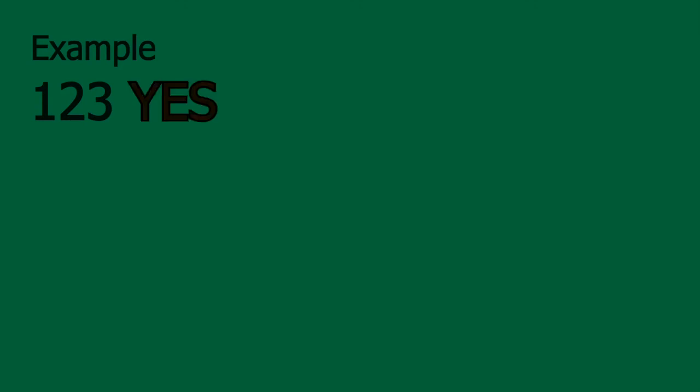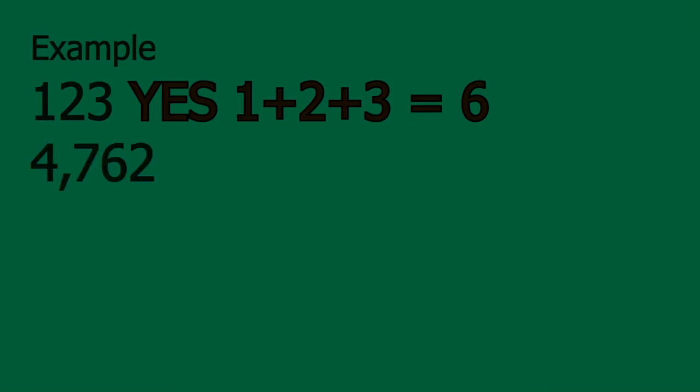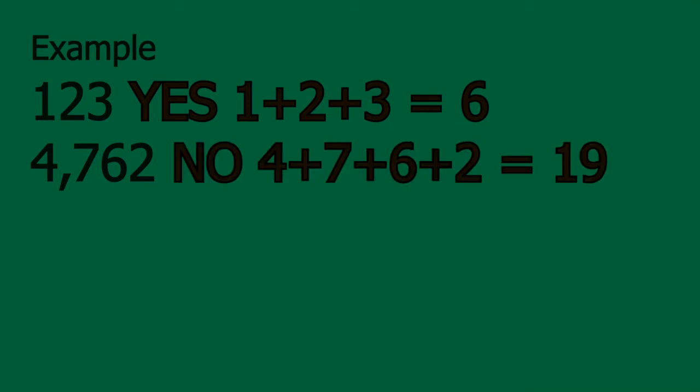For example, let's look at 123. We know 123 can be divided by 3 because 1 plus 2 plus 3 equals 6, and from our experience we know 6 can be divided by 3. Therefore the original number, 123, can be divided by 3 as well. Let's look at a bigger number: 4,762. If we add its digits together, we get 4 plus 7 plus 6 plus 2, which is 19. From our experience, 19 cannot be divided by 3. Therefore, 4,762 cannot be divided by 3.